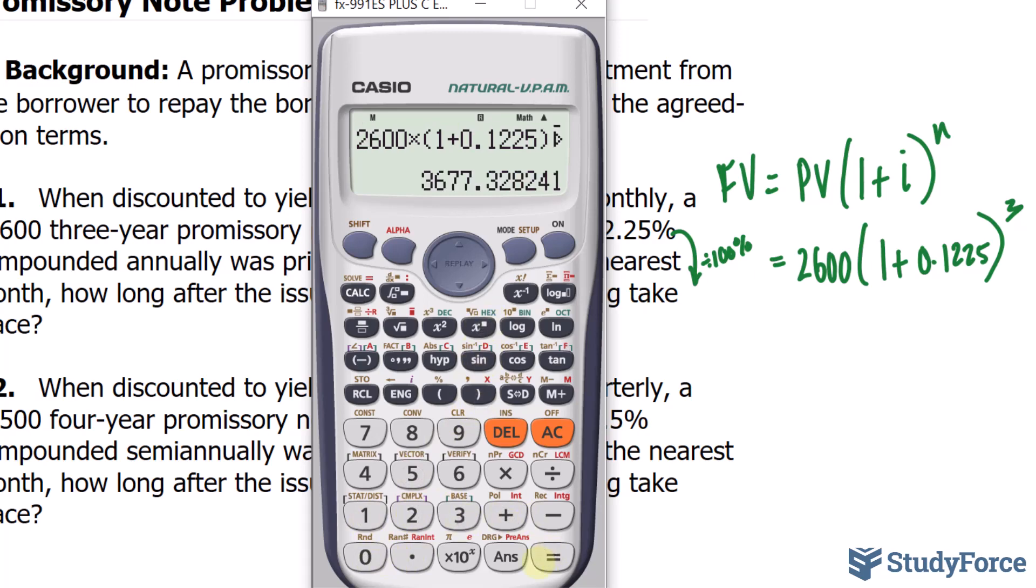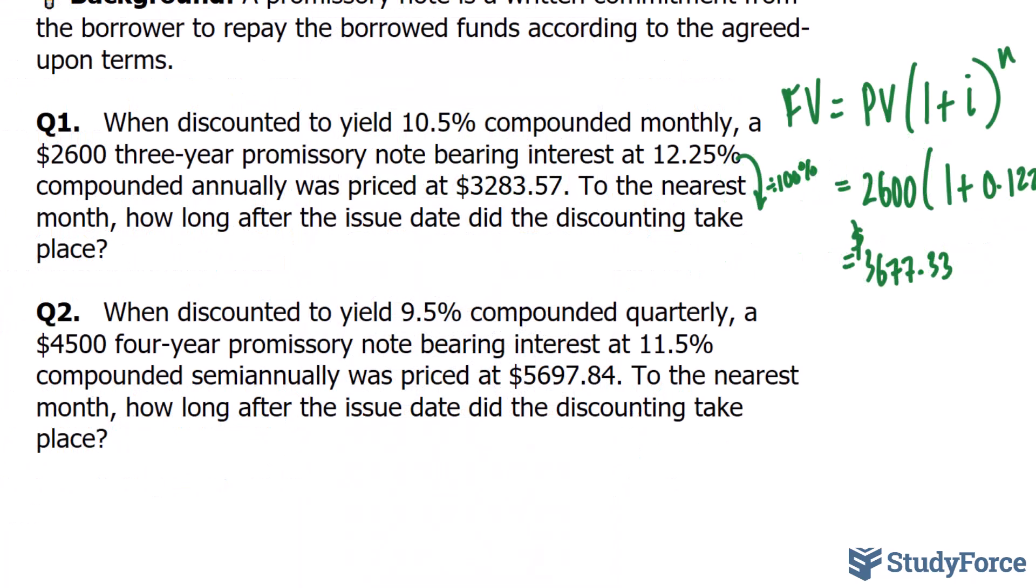The $2,600 would mature to $3,677.33. We're told that this amount will get discounted by a certain length of time, which is what we're looking for. Notice that it's asking how long after the issue date at 10.5%, where it eventually becomes that amount.